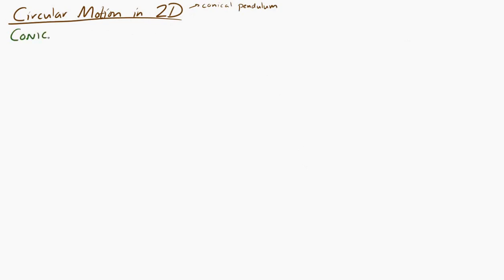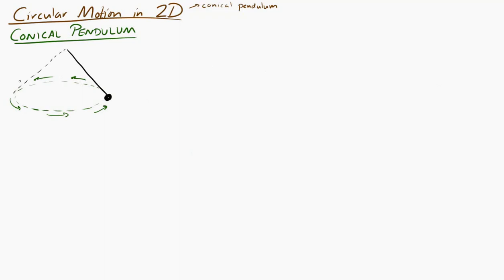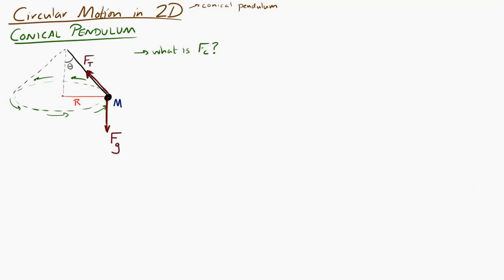Now let's look at two-dimensional circular motion examples, starting with the conical pendulum. A ball on a string rotates in a horizontal circle; the string traces out the shape of a cone. The string makes an angle theta with the vertical, the radius of the circle is R, and the mass is M. In this setup, there's no single force pointing directly toward the center — there's a weight downward and a tension along the string.